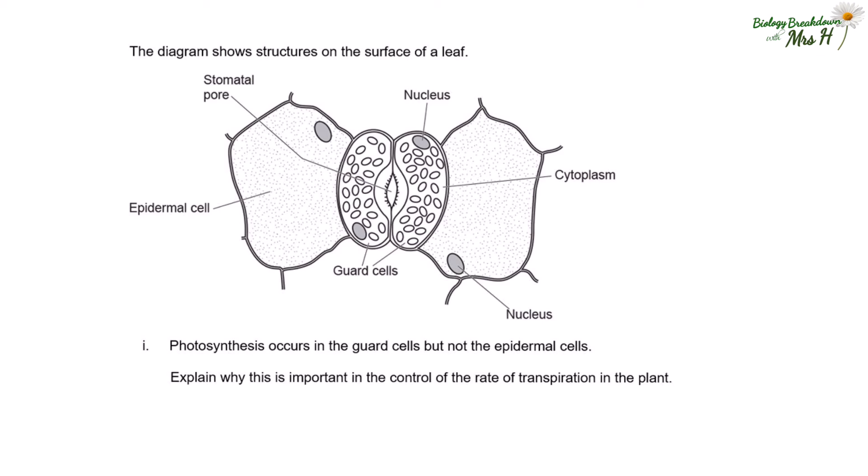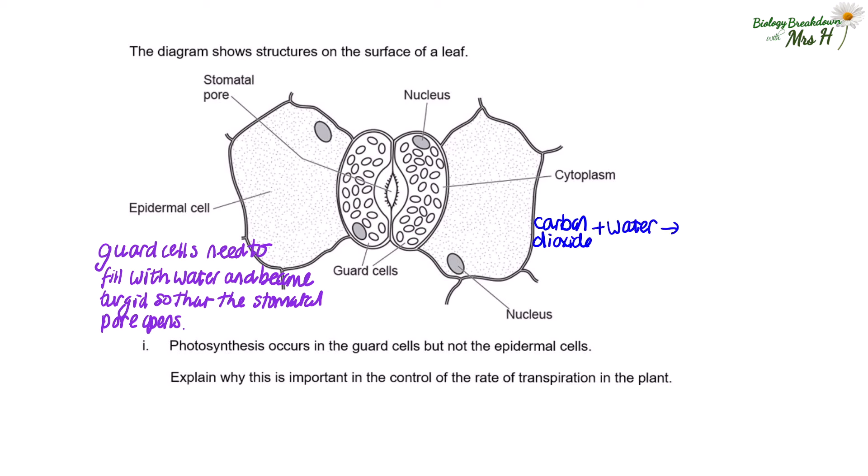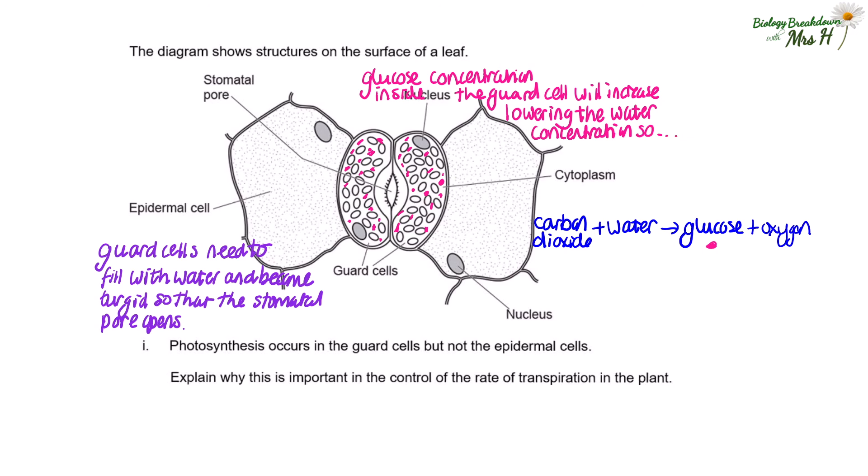So what has photosynthesis got to do with this? We remember our photosynthesis equation is carbon dioxide plus water gives glucose and oxygen. So the glucose concentration inside the guard cells is going to increase. It's not going to increase in the epidermal cells because there are no chloroplasts in there, there's no photosynthesis happening according to the question. So if you've got glucose concentration building up in the guard cells, then that's actually lowering the water concentration in the guard cell. So that's going to cause water to move by osmosis from the epidermal cells into the guard cells.